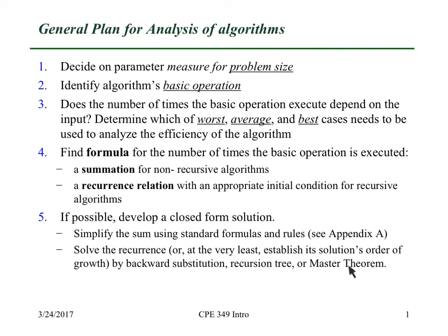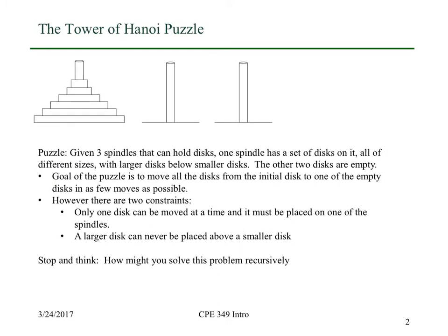Later on in the course I'll talk about the master theorem. To illustrate this I'm going to work on a simple example called the Tower of Hanoi puzzle. We're going to have three towers or spindles, and on one of the spindles we're going to have a set of disks. Notice that the disks on this initial spindle — the source spindle — are in decreasing size as you go up. So all during the puzzle you're only going to be able to put smaller things on top of larger things.